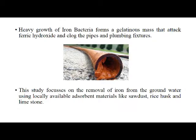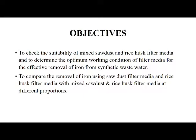Heavy growth of iron bacteria forms a gelatinous mass that attacks ferric hydroxide and clogs the pipes and plumbing fixtures. This figure shows the effect of excess iron in water passing through the pipe. This study focuses on the removal of iron from groundwater using locally available absorbent materials like sawdust, rice husk, and limestone.